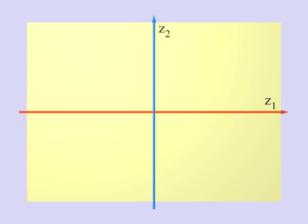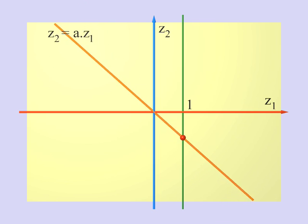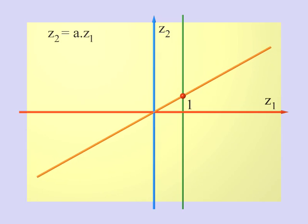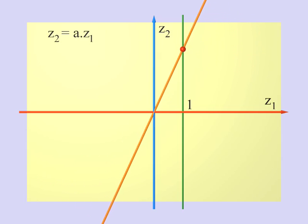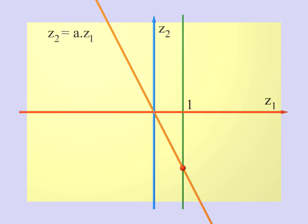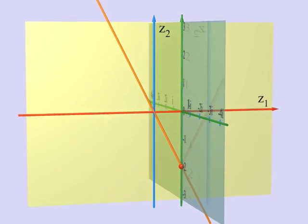Let's try to understand this better by returning to the board for a moment. Look, we have a Hopf circle for each line. Each one of these lines has an equation of the form z₂ equal to A times z₁, where A is a complex number — the slope of the line — and is indicated by the red point moving on the green line. Actually, the vertical axis does not have such an equation, but in this case we may say that A is infinite.